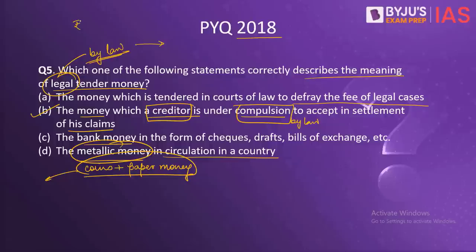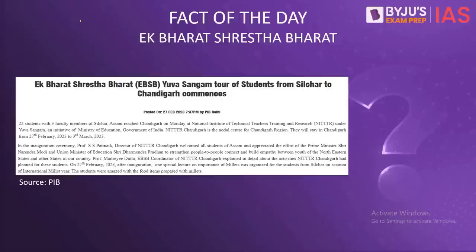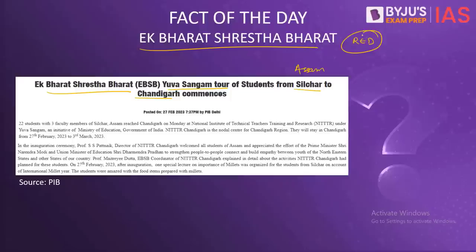Now for the fact of the day: Ek Bharat Shresth Bharat. We have taken this because under this scheme, the Yuga Sangam tour of students from Silchar in Assam to Chandigarh has commenced. The idea of the Ek Bharat Shresth Bharat scheme was given by Prime Minister Narendra Modi during National Unity Day, that is Rashtriya Ekta Divas, celebrated on 31st October commemorating the birth anniversary of Sardar Vallabhbhai Patel. The scheme commenced in 2015 to celebrate the cultural diversity of the country through mutual interaction and reciprocity between people of different states and union territories.